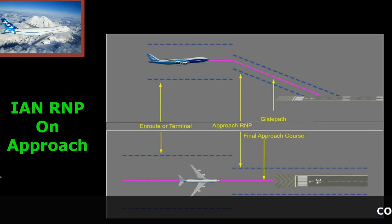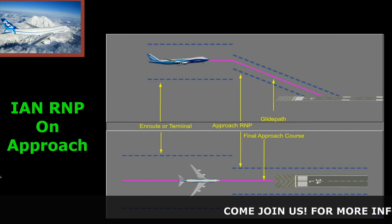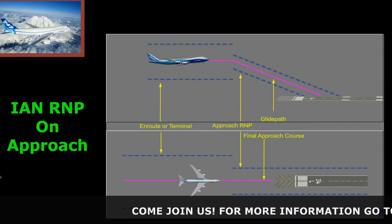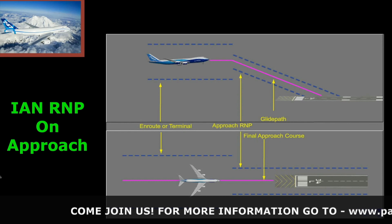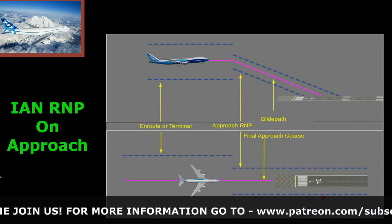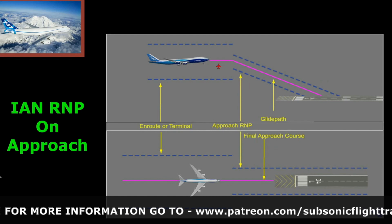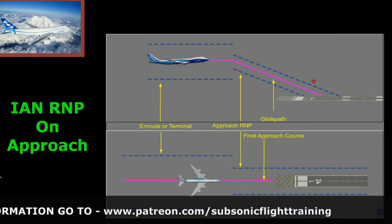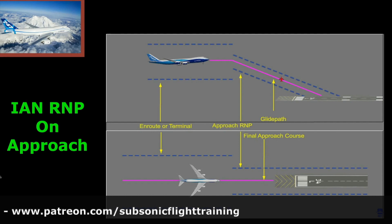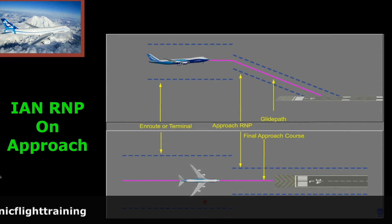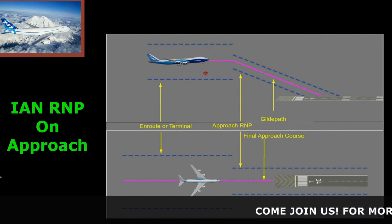This is what the IAN RNP would look like on the approach. Normally we go from an en route type of RNP to an approach RNP, so it narrows — this is where it looks more like a tube than a glide slope. A glide slope is more of a fan; the glide path is more of a tube. That happens both vertically and laterally, where the RNP may be 1 but narrows to 0.3. Vertically, the RNP also narrows in terms of feet.